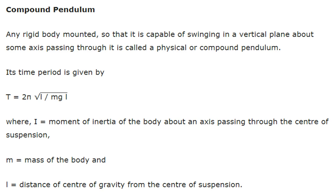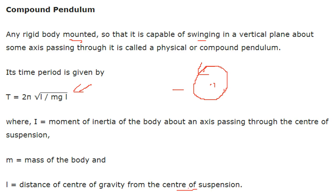Compound pendulum: any rigid body mounted so that it is capable of swinging in a vertical plane about some axis passing through it is called a physical or compound pendulum. The time period is given by the corresponding expression, where l is the distance of the centre of gravity from the centre of suspension, i is the moment of inertia of the body about an axis passing through the centre of suspension, and m is the mass of the body.